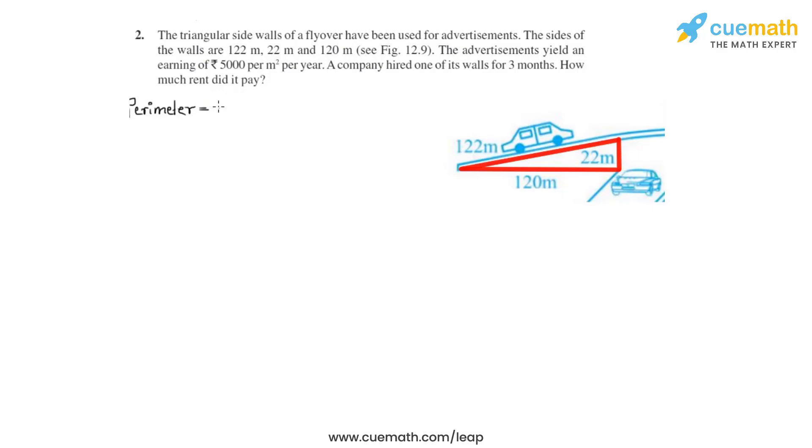So let's add 122 meters, 120 meters, and 22 meters. So we get 2s, where s is the semiperimeter, to be equal to 264 meters. From this we can calculate the semiperimeter s to be equal to 132 meters.